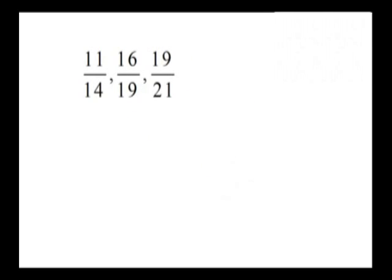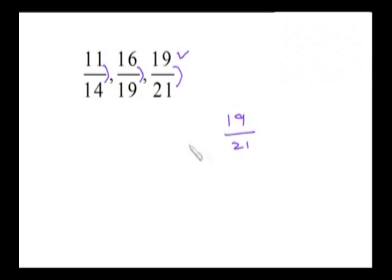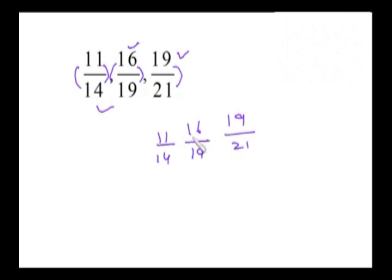Now let's take this set of fractions. It is 19 by 21; the difference is 2. In this case the difference is 3, and in this case the difference is also 3 with the highest numerator among those two. Since 19 by 21 has the smaller difference and the highest numerator overall, 19 by 21 is definitely the greatest. Between the two fractions with difference 3, the numerator of 16 by 19 is higher, so 16 by 19 will be greater than 11 by 14.